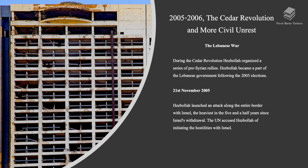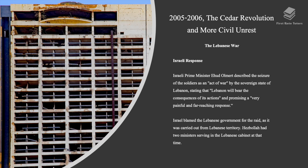During the Cedar Revolution, Hezbollah organized a series of pro-Syrian rallies and became part of the Lebanese government following the 2005 elections. In November 2005, Hezbollah launched an attack along the entire border with Israel, the heaviest in the five and a half years since Israel's withdrawal. The UN accused Hezbollah of initiating the hostilities. Israeli Prime Minister Ehud Olmert described the seizure of soldiers as an act of war by the sovereign state of Lebanon, promising a very painful and far-reaching response. Israel blamed the Lebanese government since the raid was carried out from Lebanese territory.